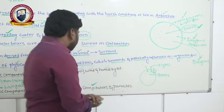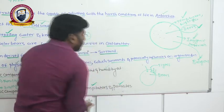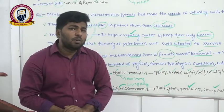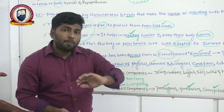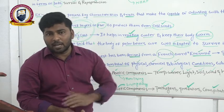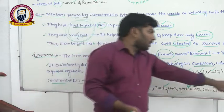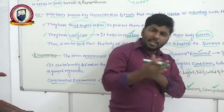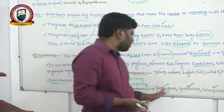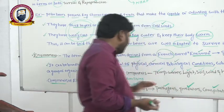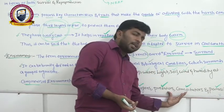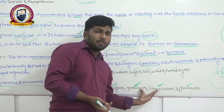Next, parasites — organisms that do not have the ability to prepare their own food and therefore depend upon other organisms, called the host organism, to get food material. Such organisms are called parasites. We will discuss all these interactions in detail in the population interactions topic.